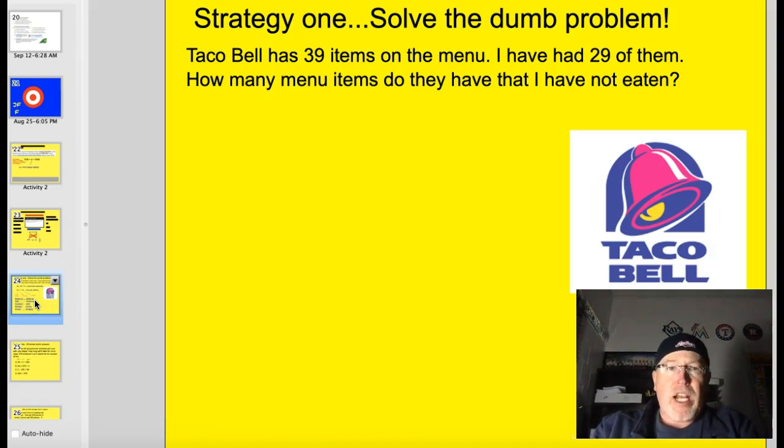Let's take a look at strategies. Taco Bell has 39 items on the menu. I've had 29 of them in one sitting. How many menu items do they have that I have not eaten? Strategy one, solve the dumb problem. Well, I would say 39 minus 29 equals 10, right? No big deal. It's not about solving the problem.